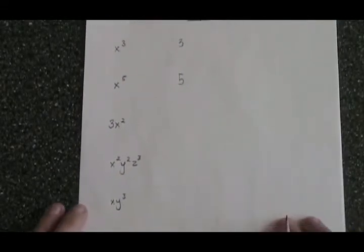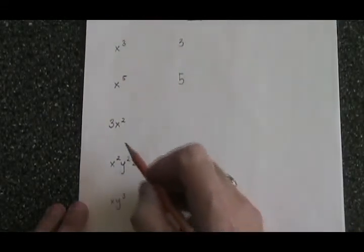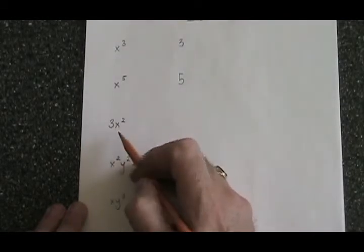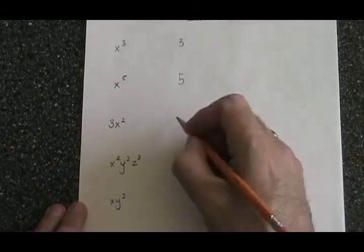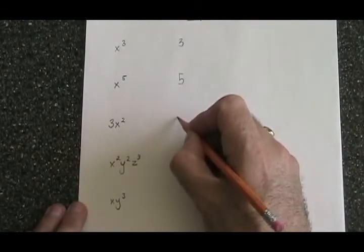If we have a monomial that has a numerical coefficient, it doesn't change anything. The exponent is still this small number up and to the right of the x, so the exponent in this case is 2.